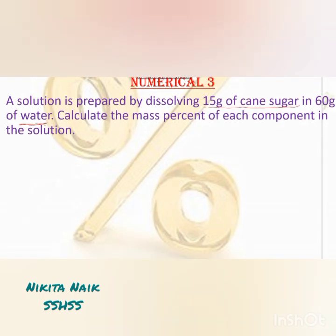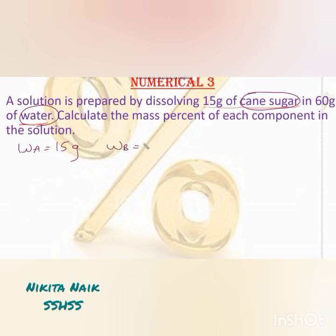So here mass of solute is given. Solute is our cane sugar, so let's take it as wa. Wa is equal to 15 gram, and water is the solvent. Let's take this as wb, that is the mass of water, which is equal to 60 gram. So what is the mass of solution? That is wa plus wb, which gives us 15 plus 60, which is 75 gram.